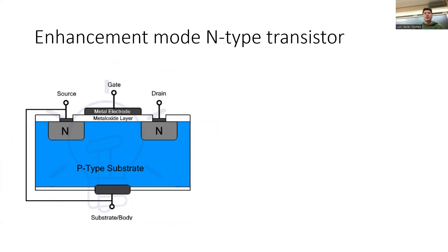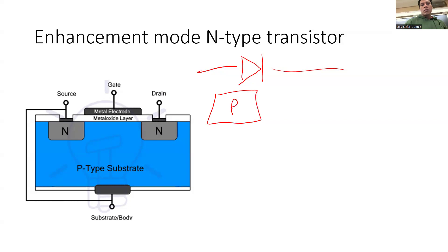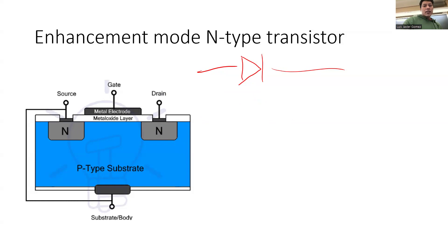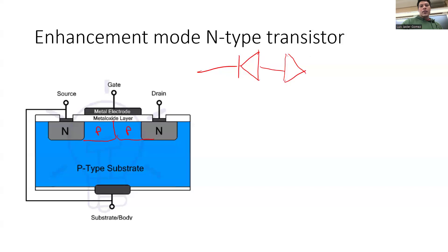So let's talk a little bit about the physics of this device. If you have taken 2K1, you learned about p-n junctions — you basically had some p-type material and some n-type material, and current could only flow in one direction. So we can think of this device here as two p-n junctions — this is p-type and this is p-type. So what we have here is a diode connected to another diode.